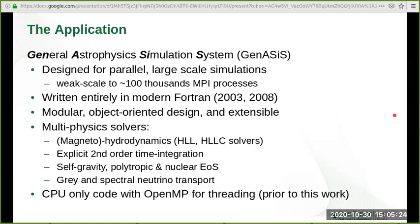Genesis is written entirely in modern Fortran using features from Fortran 2003 and 2008 to achieve modular object-oriented design and extensible physics solvers. Genesis has multi-physics solvers for hydrodynamics with explicit second-order time integration.